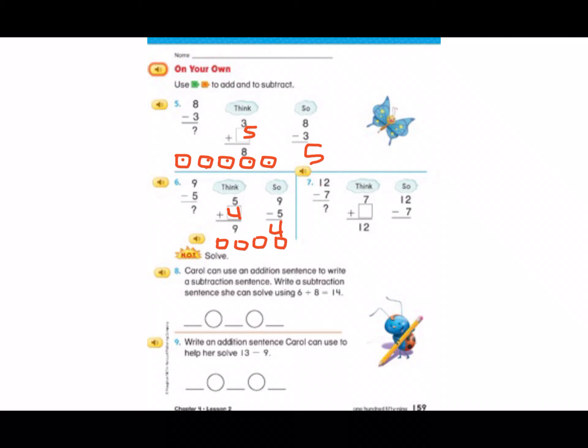Look at number 7. 12 minus 7 equals? So think what number do I need to add to 7 to equal 12? Let me draw cubes to count on. So 7, 8, 9, 10, 11, 12. Count with me to see how many cubes I drew. 1, 2, 3, 4, 5. 7 plus 5 equals 12, so 12 minus 7 equals 5.